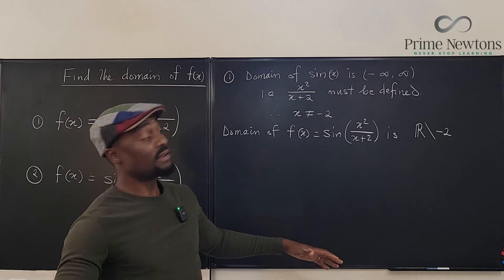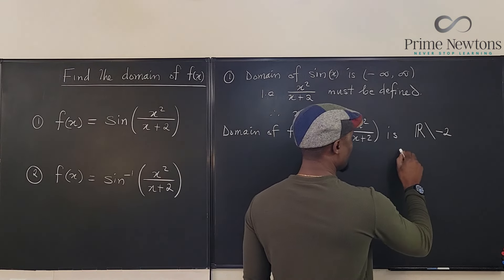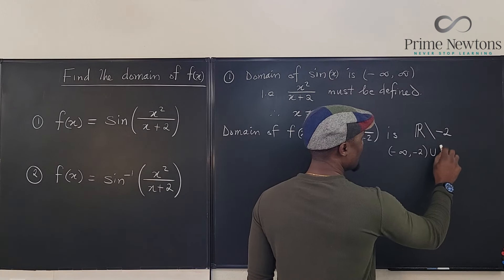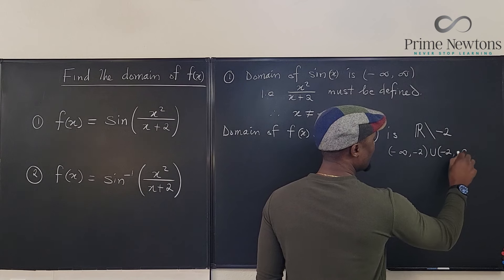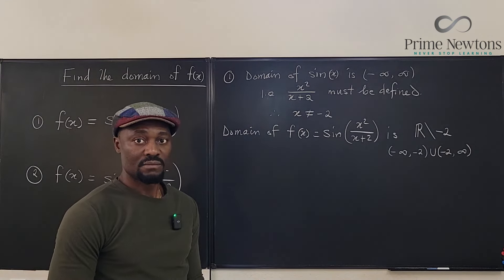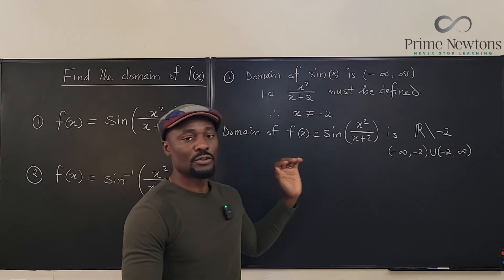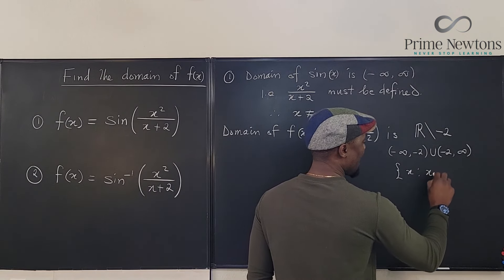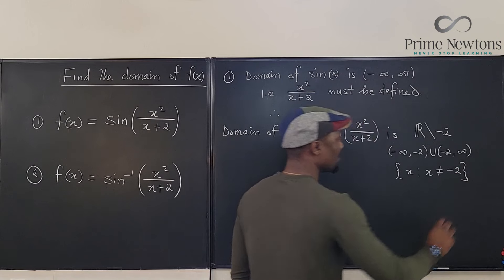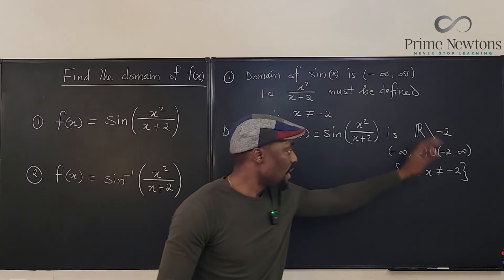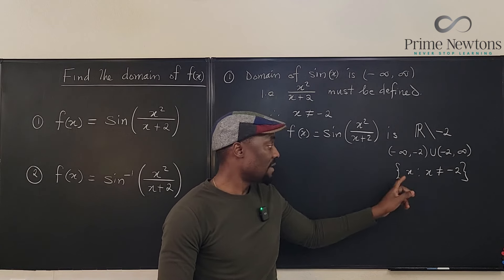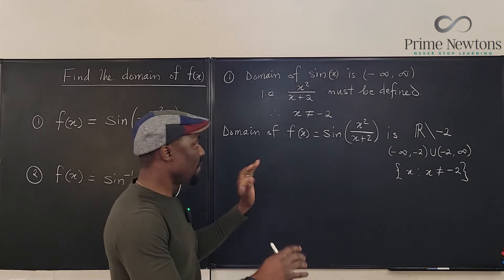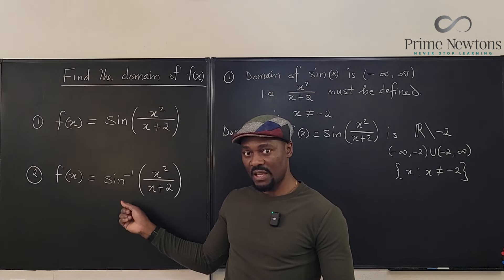Or you can write the longer version of it, which is negative infinity to negative 2 union negative 2 to infinity. Or you can say it is the set of x such that x is not equal to negative 2. So these are the ways you can write the domain of this function. By the way, the focus is going to be on the second one because the second one is a little tricky.